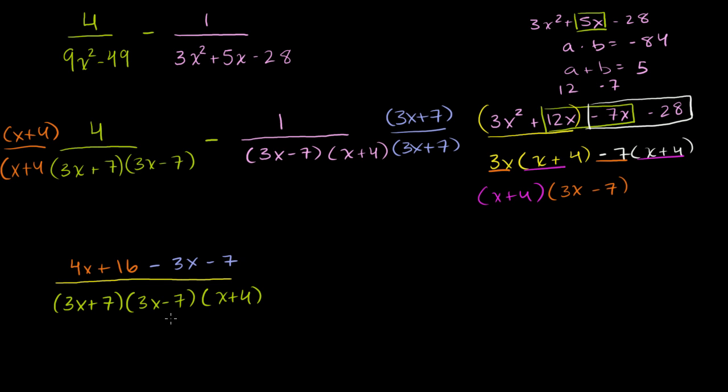And then what is this going to be equal to? The numerator, we have a 4x minus a 3x, which is just an x. And then we have a 16 minus a 7, which is a 9. And then the denominator, we of course have all of this stuff, which is 3x plus 7 times 3x minus 7 times x plus 4. And we're done.